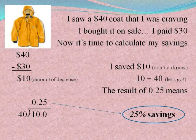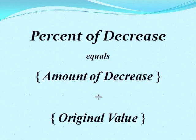10 divided by 40, let's go. The result of 0.25 means 25% savings. Percent of decrease equals amount of decrease divided by original value.